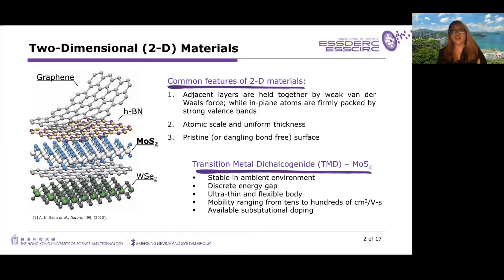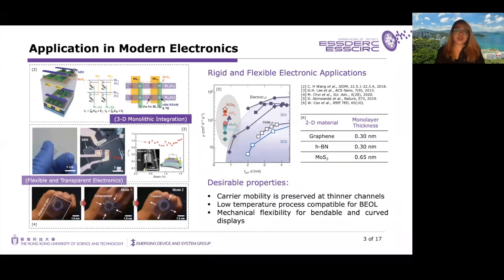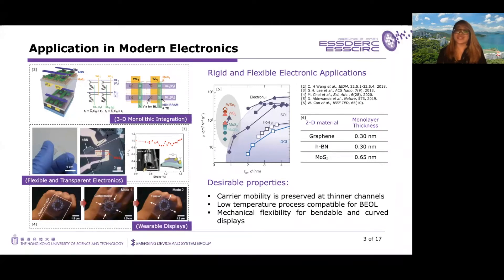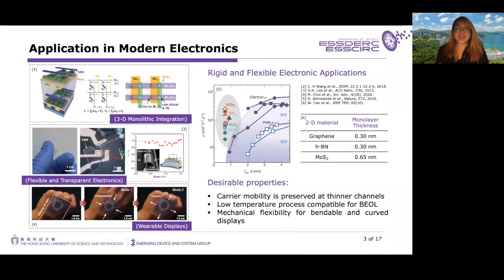There are available substitutional doping methods to achieve both N and P-type characteristics. When we consider modern electronic applications, we see MoS2-based transistors used in 3D monolithic integration, flexible and transparent electronics, and in wearable displays.